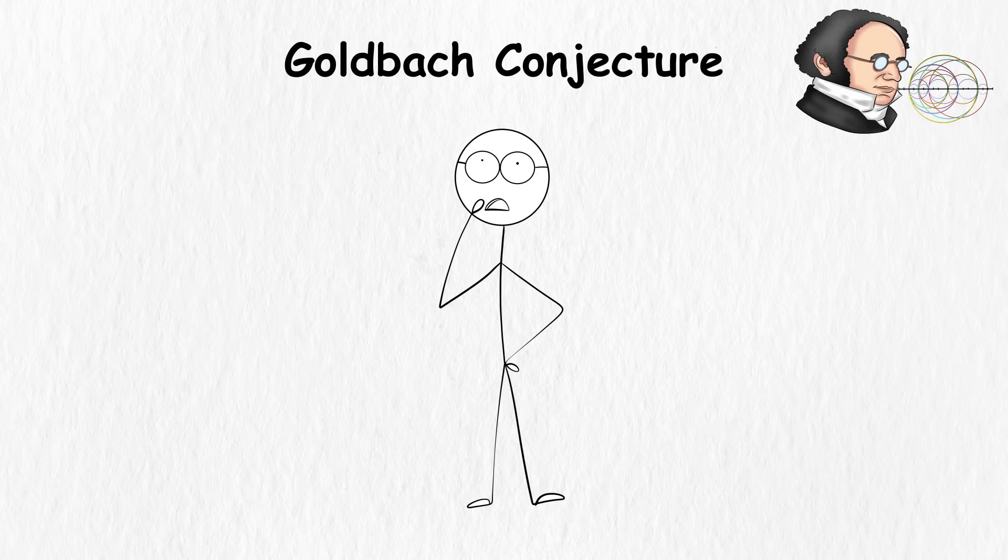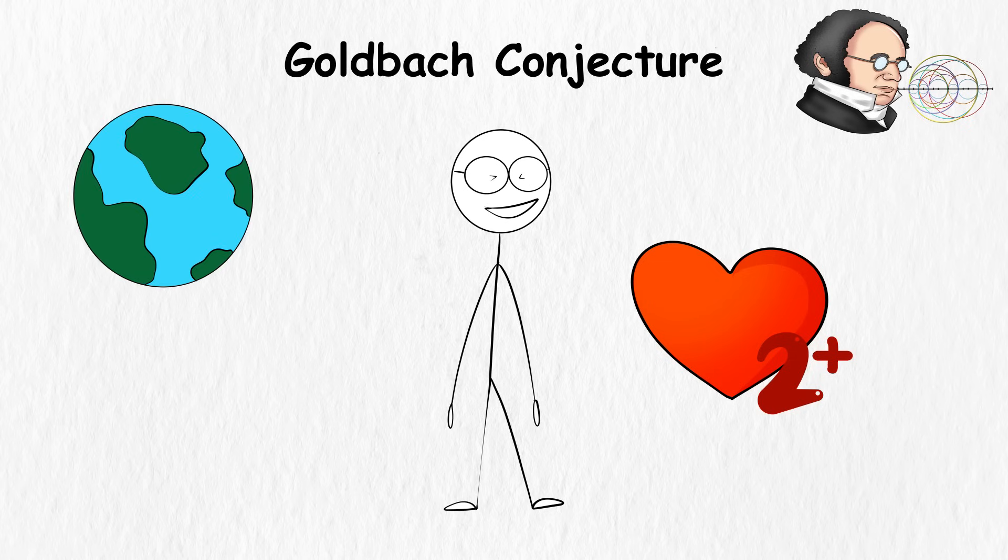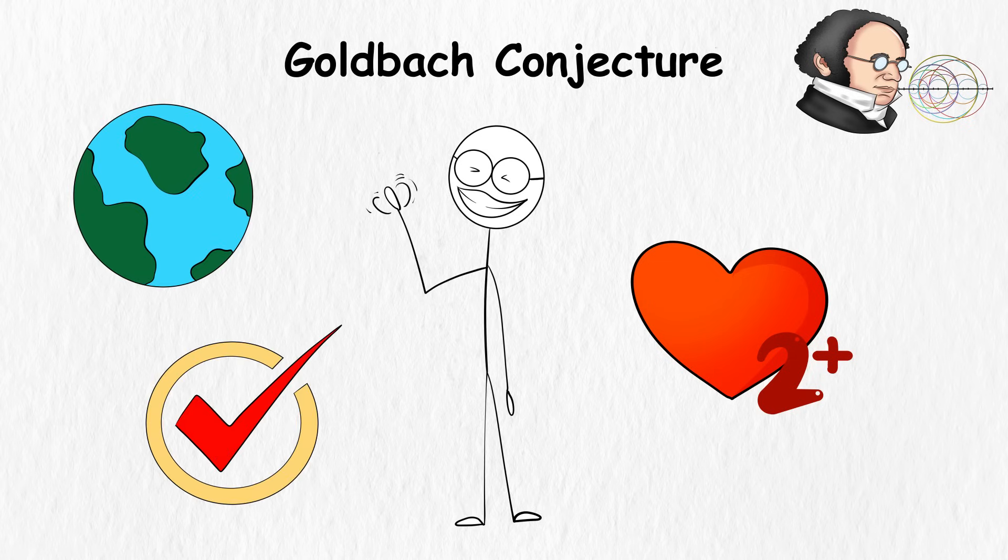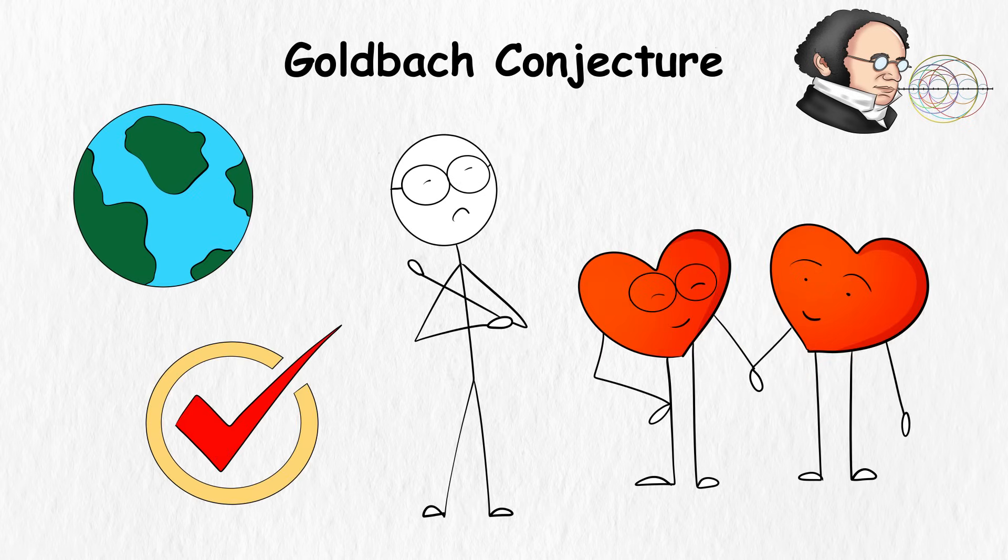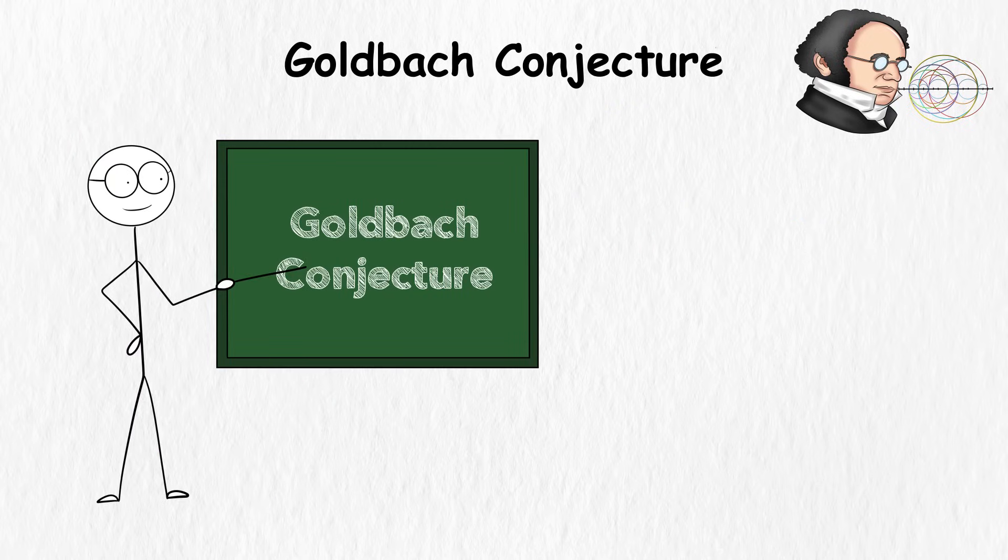Goldbach Conjecture. You know there are at least two secret admirers for every person in the world. While that may be true, good luck finding those admirers, because chances are you can't even spot your own. This is why the Goldbach Conjecture remains unsolved.